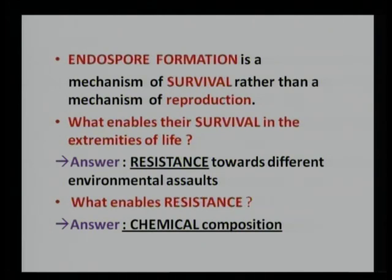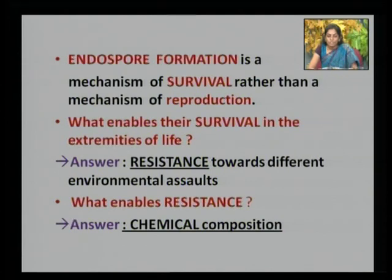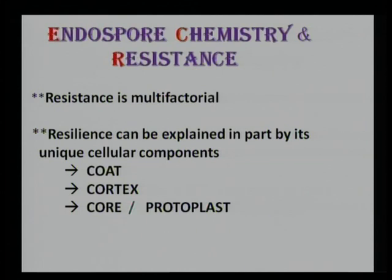What enables their survival in the extremities of life? The answer lies in their resistance towards different environmental assaults. What enables this resistance? The answer lies in their chemical composition and cellular components. We can say that endospore chemistry and resistance are interlinked. Resistance is multifactorial and cannot be accounted for by any single parameter. The resilience of an endospore can be explained by its unique cellular components: its core, cortex, and coat.